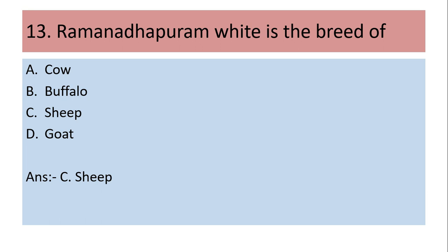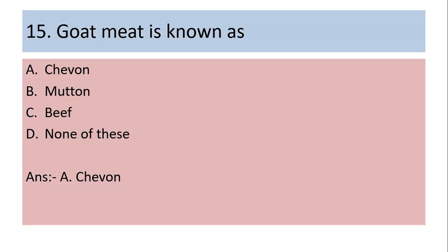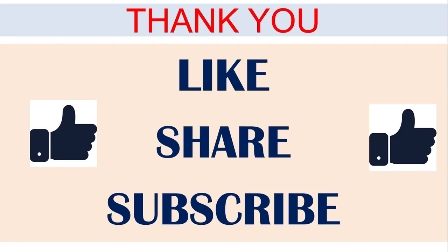Fourteenth question: Castrated male sheep — [question options not fully stated]. Fifteenth question: Goat meat is known as — (a) chevon, (b) mutton, (c) beef, (d) none of these. Answer is (a) chevon. Thank you. If you like this channel, please share and subscribe. Don't forget to click the bell button for notifications.